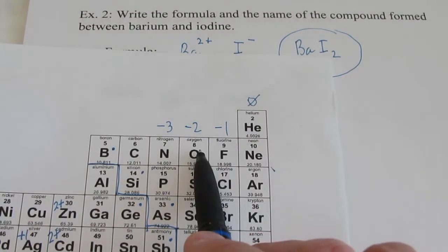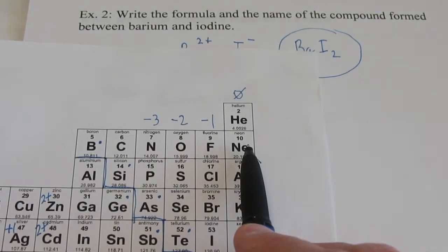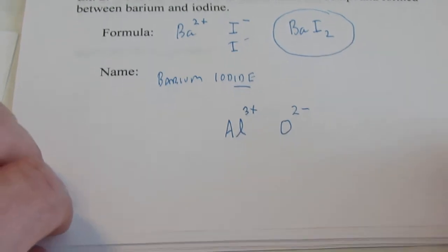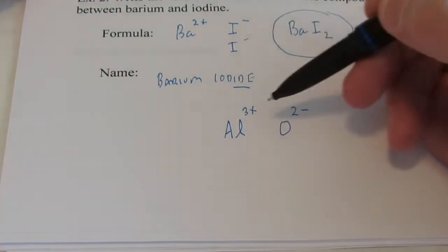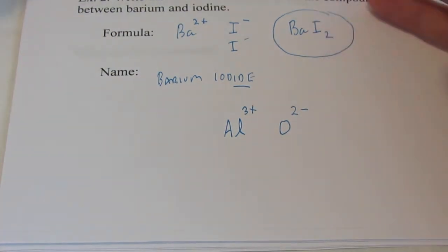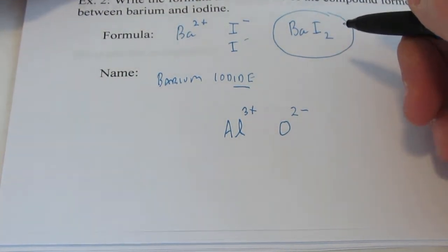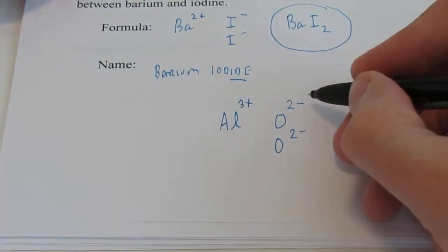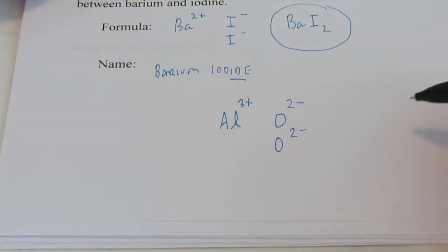Oxygen has 8 electrons. It wants to get to 10, so it is 2 negative. So how would I write that formula between aluminum, that's 3 positive, and oxygen, that's 2 negative? One of each won't cut it. The sum of the charge will not add up to 0. Well, what if I had 2 oxygens? Would that help me?